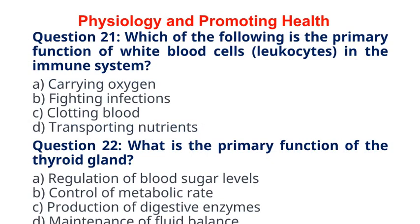Question 21. Which of the following is the primary function of white blood cells, leukocytes, in the immune system? A. Carrying Oxygen. B. Fighting Infections. C. Clotting Blood. D. Transporting Nutrients. The correct answer to question 21 is option B. Fighting Infections. Explanation: White blood cells are crucial components of the immune system, responsible for defending the body against infections and foreign invaders.